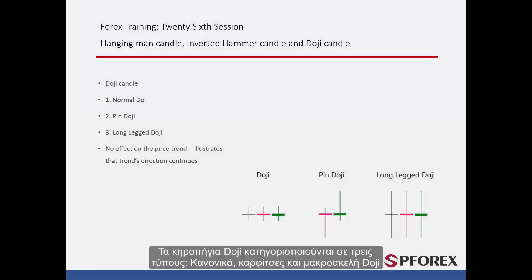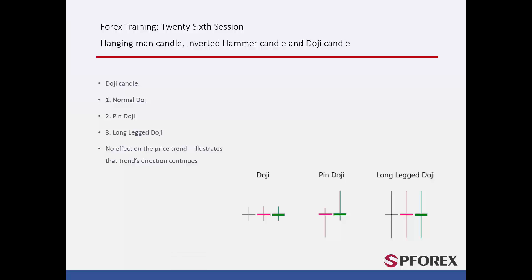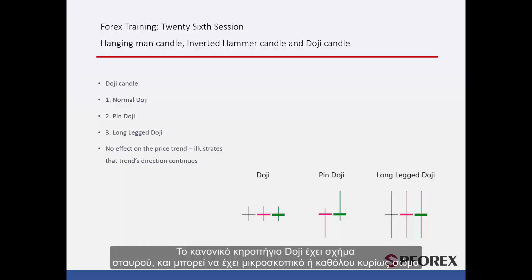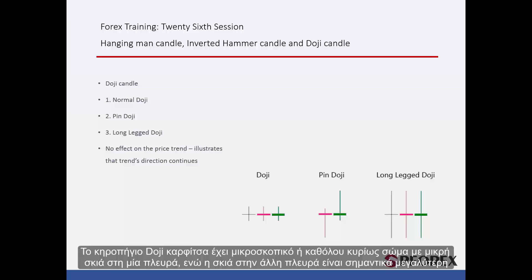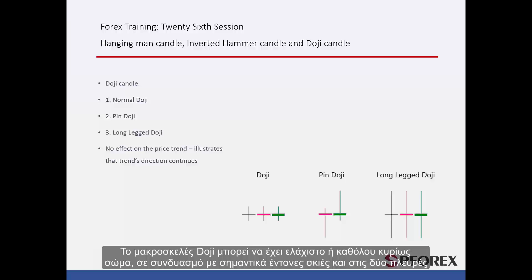Doji Candles are classified into three types: Normal, Pin, and Long Leg Doji. Normal Doji Candles have a cross or plus shape with no or a tiny main body. Pin Doji Candles have a tiny or no main body with a small shadow on one side and a considerably long shadow on the other side. Long Leg Doji Candles may have a minute or no main body, with substantial long shadows on both sides.